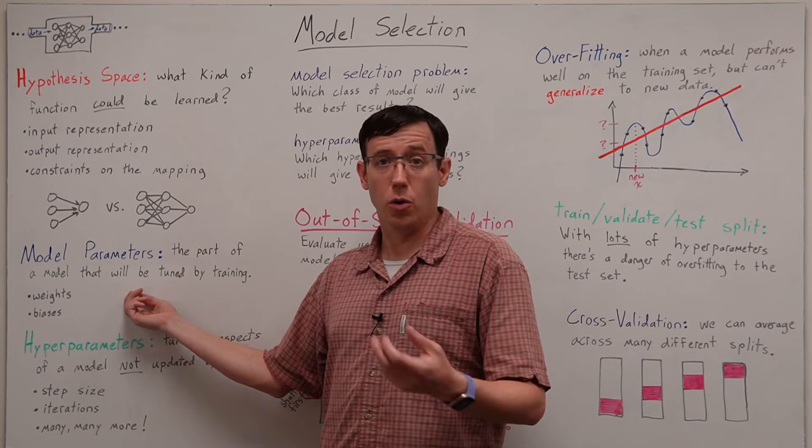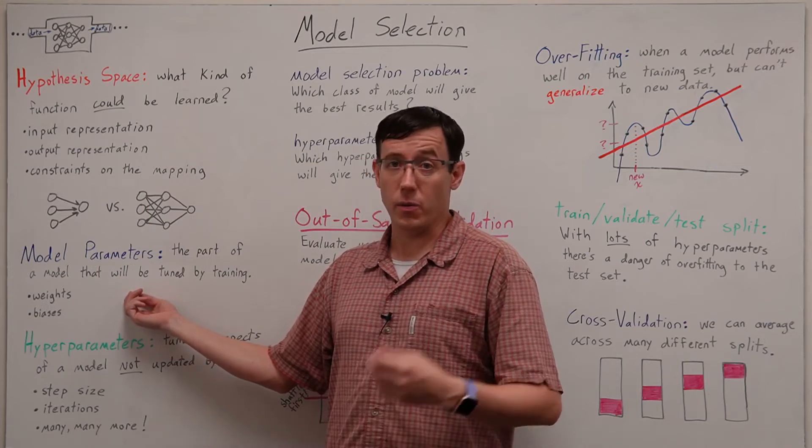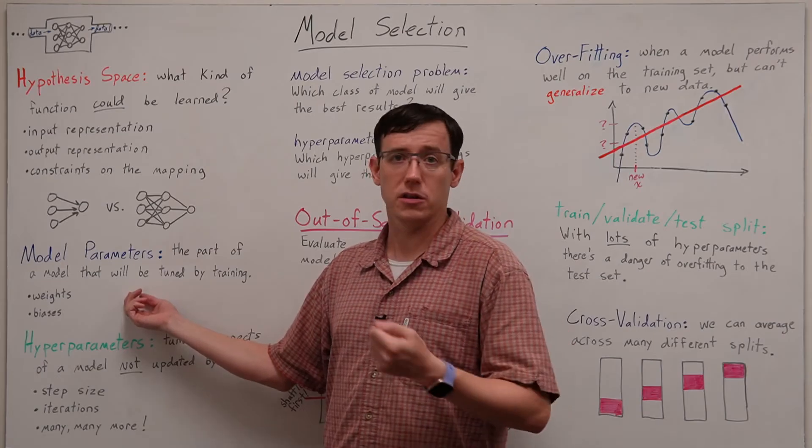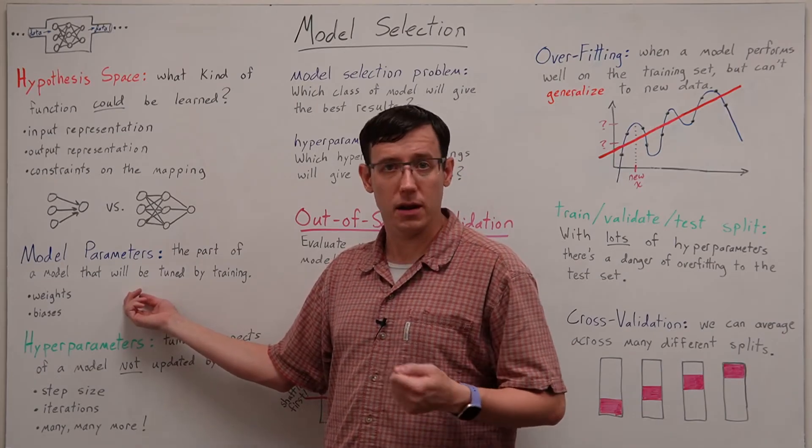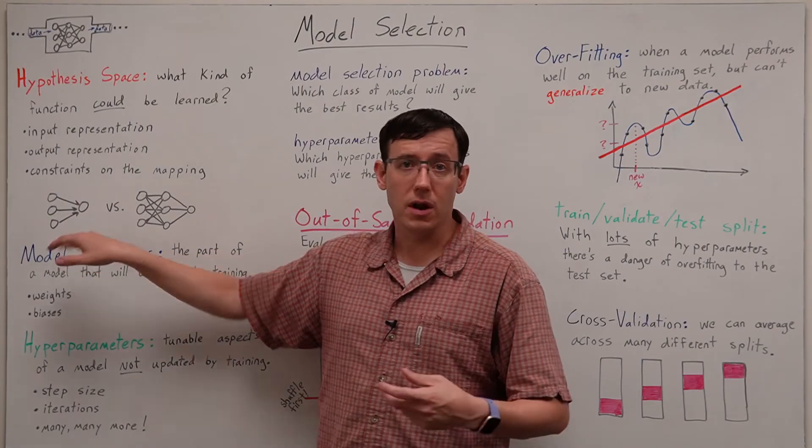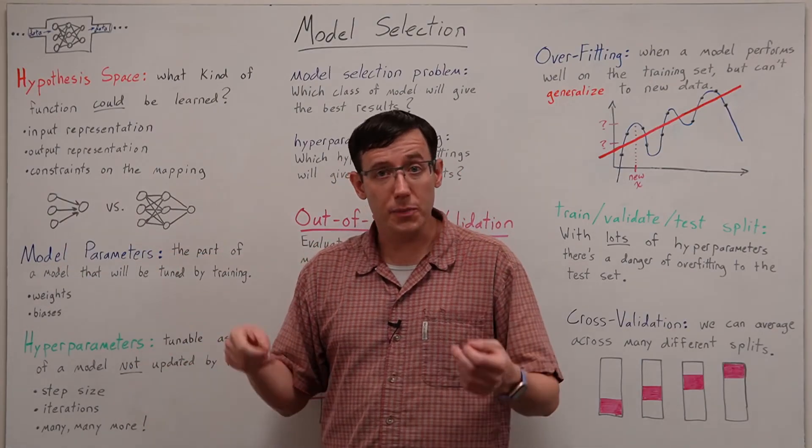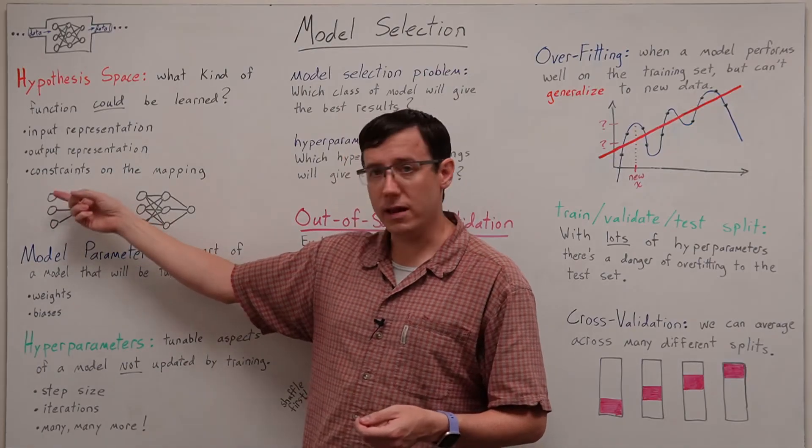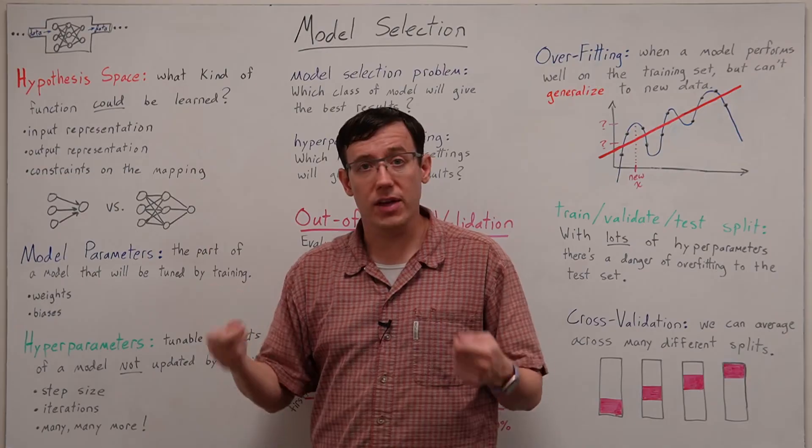That's in fact the whole point of machine learning, that we don't know exactly what function we want but we can adjust the parameters based on the data. And in the case of the single neuron models that we've seen so far, the parameters that got updated by the training were the weights and the bias of that single neuron.